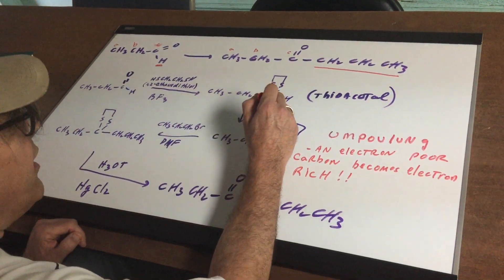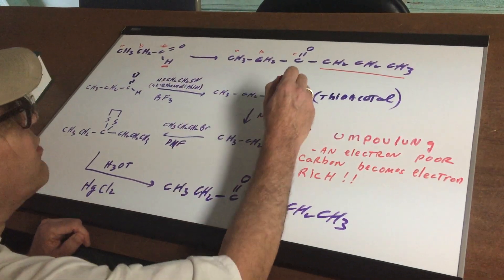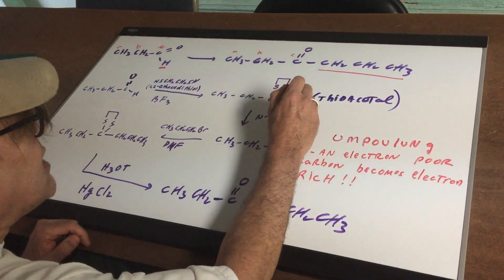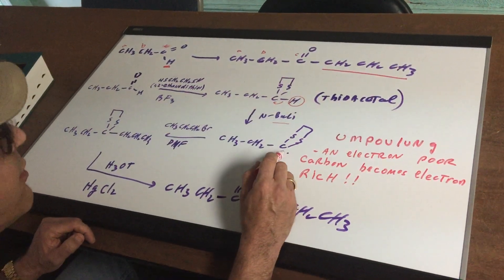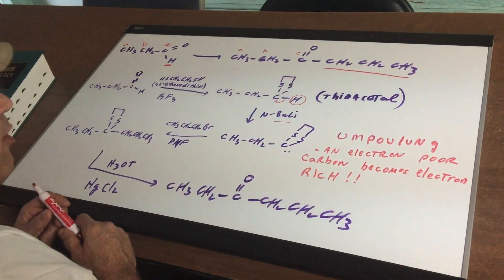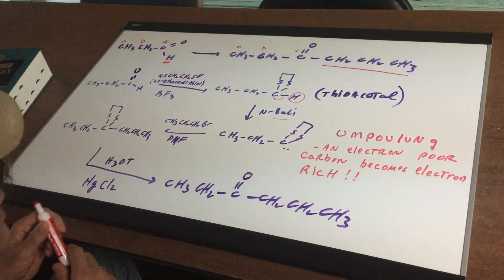Now I'm gonna then treat it with a very strong base called n-butyllithium, and that base is gonna remove off this H and move the electrons down, and we're gonna form this carbanion. Now here's the kicker.